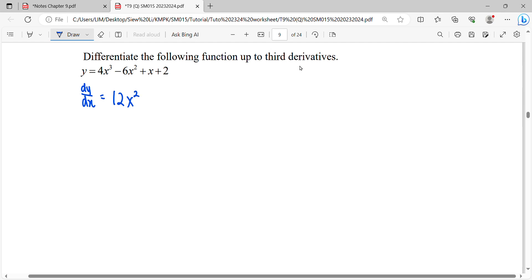When you have plus minus plus minus, we can differentiate one by one. For this 6x square, power to the left, negative 12.